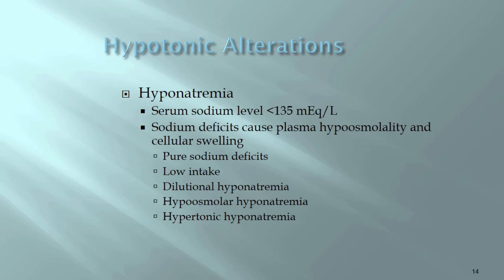Hyponatremia is diagnosed when sodium drops below 135 mEq/L — normal range is approximately 135 to 147 mEq/L. Hyponatremia causes hypo-osmolarity of plasma and cellular swelling. Causes include low sodium intake, dilutional hyponatremia from excess water, hypo-osmolar, and hypertonic hyponatremia.